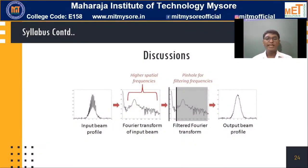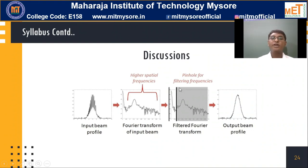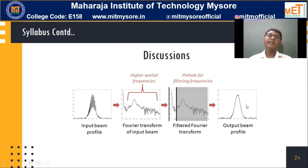In further modules, we will discuss transforms. If an image is put in a graphical form, it looks like an input beam of a profile picture. Applying higher spatial frequencies and filtering frequencies using Fourier transforms, we get an output beam where distortions present in the input beam are clearly removed. Such mathematical calculations will be learned in the coming modules.